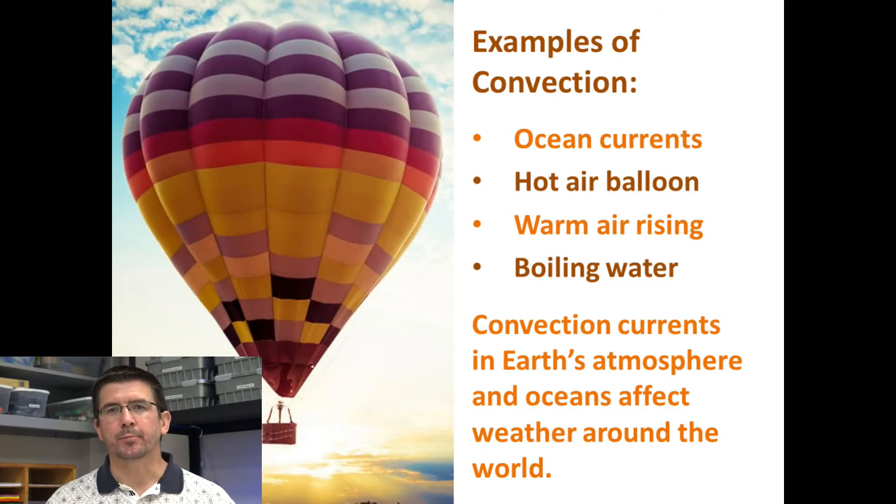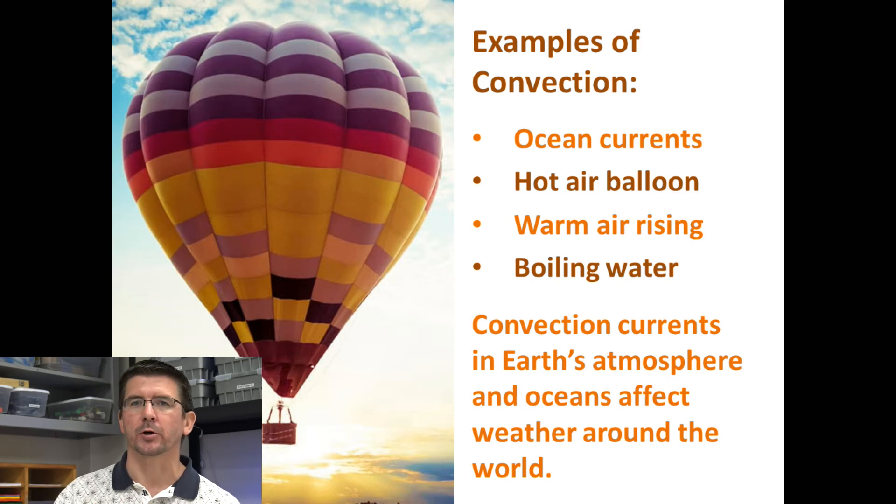Now as we look at examples of convection, one major example is ocean currents. That's something that we'll look at a little bit more when we get to the weather unit also. But ocean currents, it could be a current of warmer water such as the Gulf Stream that as it moves into cooler water, it's transferring its heat to that cooler water around it, causing ocean water to be warmer than it normally would.